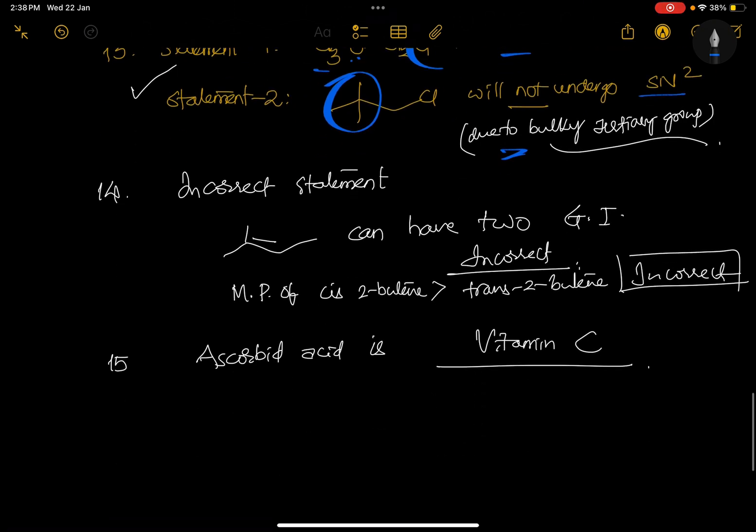Then incorrect statement - here according to the student's opinion, two incorrect statements are given. One is: this compound is asking two geometrical isomers - impossible because this is methyl, this is methyl. When two methyl groups are there, this cannot show any geometrical isomers, so wrong statement. Melting point of cis-2-butene is greater than trans-2-butene, this is wrong. Boiling point of cis-2-butene is greater, melting point of trans-2-butene is greater.